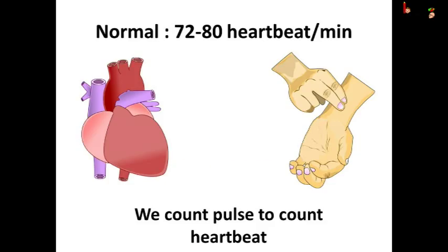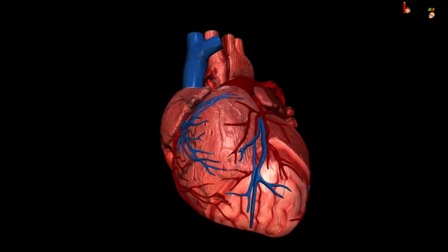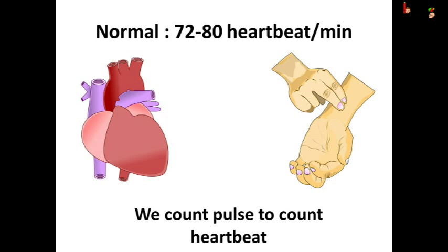The normal heartbeat of an adult person is 72 to 80 times per minute. So the number of pulses per minute, which is the pulse rate, would be the same as the number of heartbeats per minute.